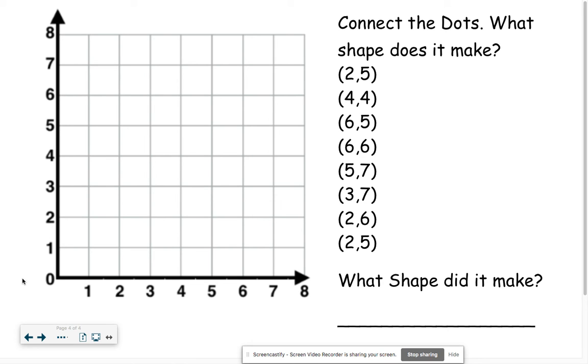Welcome back. Let's graph it. We go over two up five and we put our dot, over four up four and we're gonna connect them with a nice straight edge. We're gonna go over six and up five. And again connect with a straighter edge than that. We go over six and up six. We're gonna go over five and up seven. We're gonna go over three and up seven. We're gonna go over two and up six.